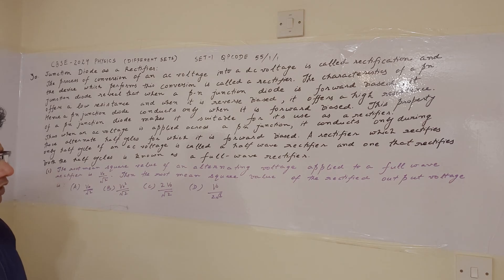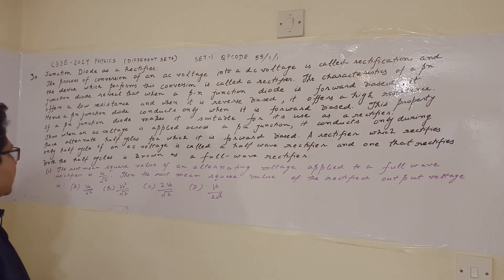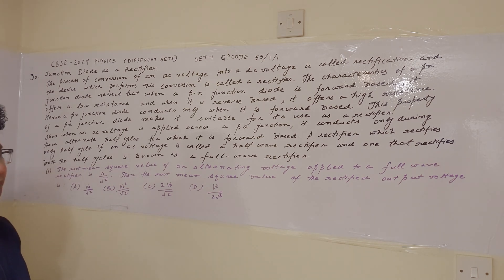A rectifier which rectifies only half cycle of an AC voltage is called a half wave rectifier, and one that rectifies both the half cycles is known as a full wave rectifier.